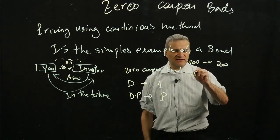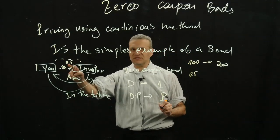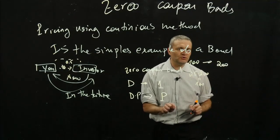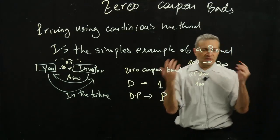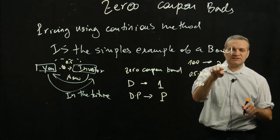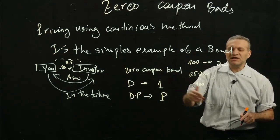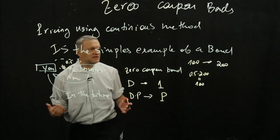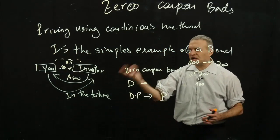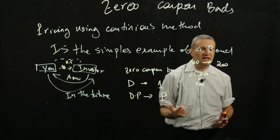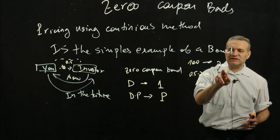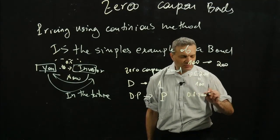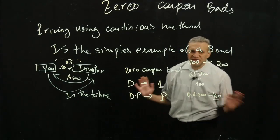You're going to get 0.5 — your discount factor — times your $200. This is $100. So you are going to pay him $200 in the future, in five years, and he is going to give you $100 today. For example, if the discount factor was not 50% but 80%, you are going to give him $200 in the future, and he is going to give you 0.8 times 200, which is $160.